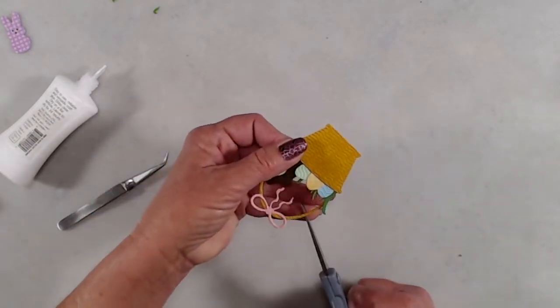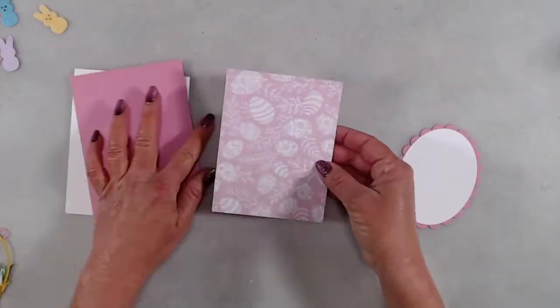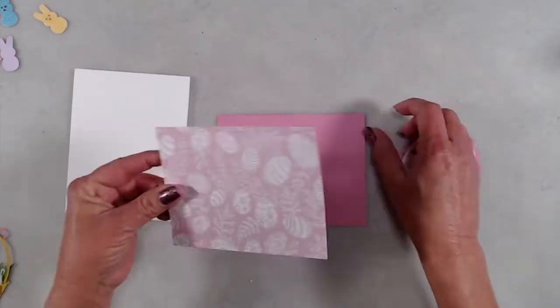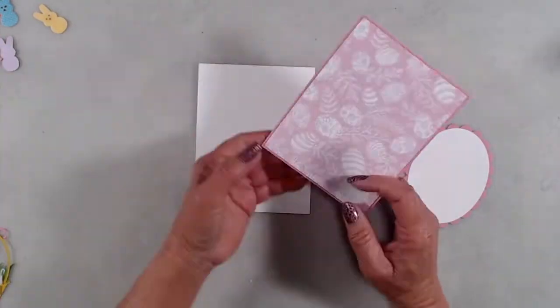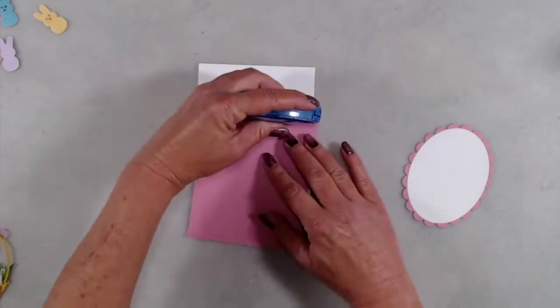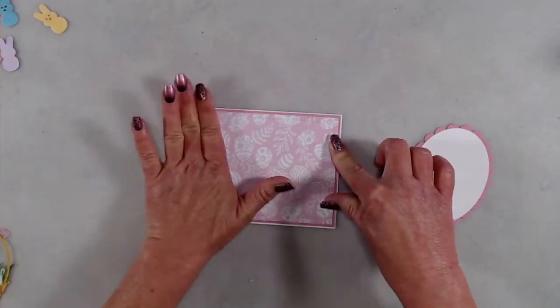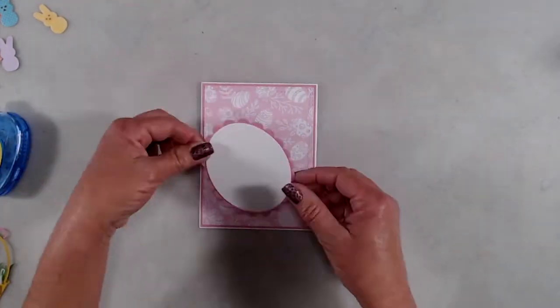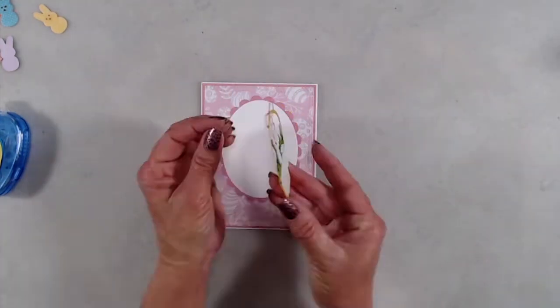Now that the basket is all put together, it's just a matter of finishing up the card. I used the wonky stitched rectangle die to cut a piece of patterned paper from the extra bunnies paper pack and adhered that to a piece of pink cardstock. I adhered that to the front of a top folding white note card, and then I adhered my ovals to the front of that. I put a bunch of foam tape on the back side of my little basket and adhered that inside the oval.